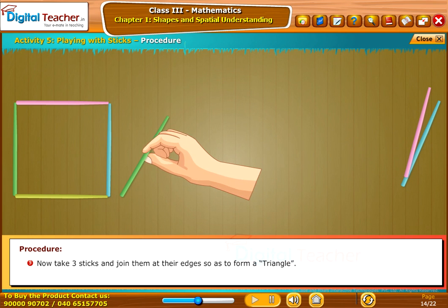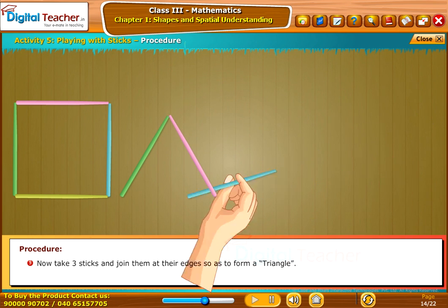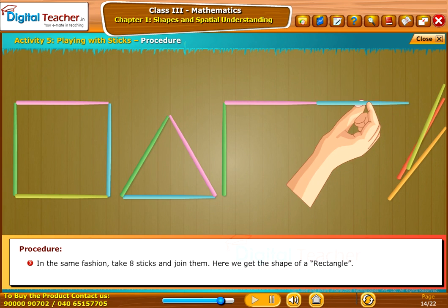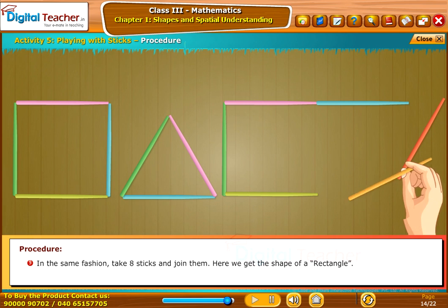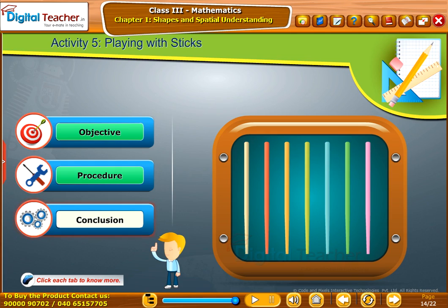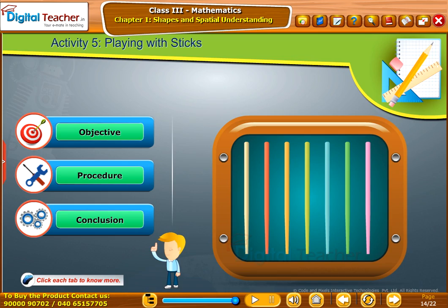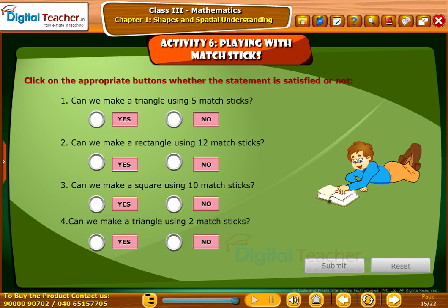Now take three sticks and join them at their edges so as to form a triangle. In the same fashion, take eight sticks and join them. Here, we get the shape of a rectangle. We can conclude that the shapes can be made using the color sticks by joining them together.